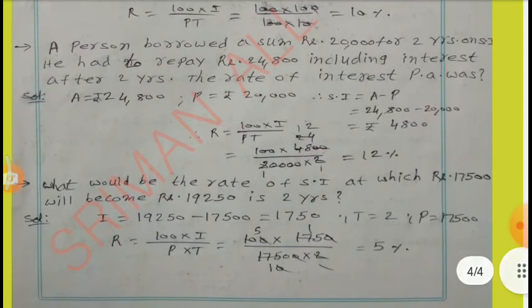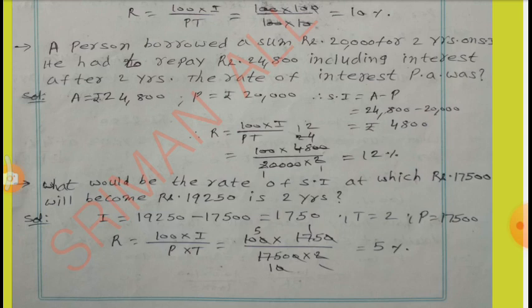A person borrowed Rs.20,000 and had to repay Rs.24,800 including interest after two years. What was the rate of interest per annum? Here, A equal to 24,800, P equal to 20,000. I equal to A minus P: 24,800 minus 20,000 equal to Rs.4,800. Therefore, R equal to 100 into I by PT. By simplifying these values, we get R equal to 12%.